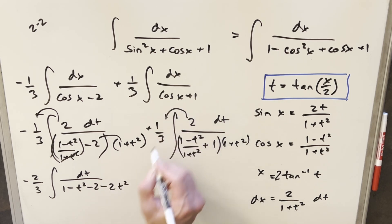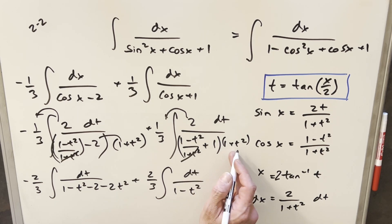Distributing in the minus 2 here, we have minus 2 minus 2 t squared. Then here, we'll take our 2 out front. So we end up with 2 thirds. The same cancellation here, and so we're left with 1 minus t squared. And then we have, distributing in the 1, we'll have a plus 1 plus t squared.